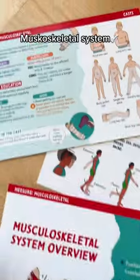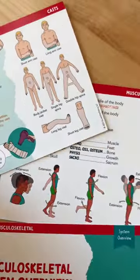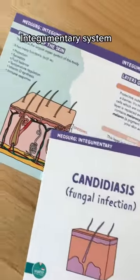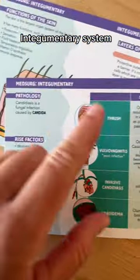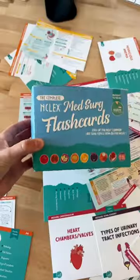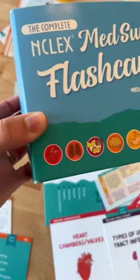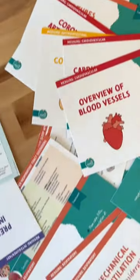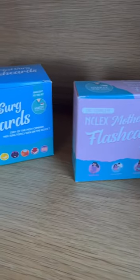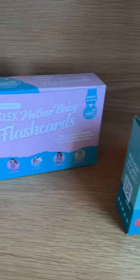The next section is the musculoskeletal section. And last but not least, we have the integumentary system, which covers all about the skin. You can grab these MedSurg flashcards as well as other nursing school flashcards — the link is in my bio. Happy studying, future nurses!